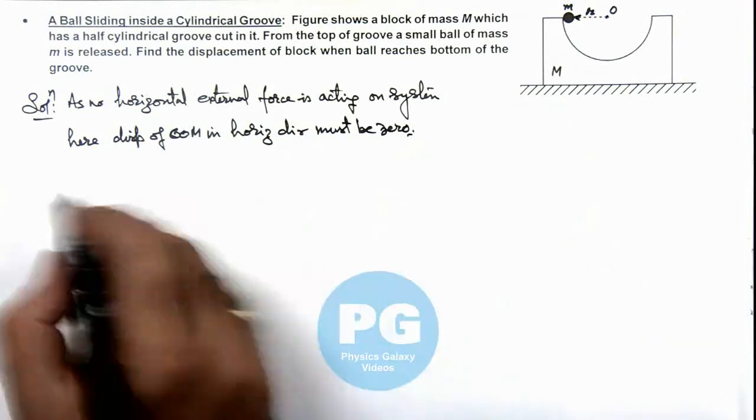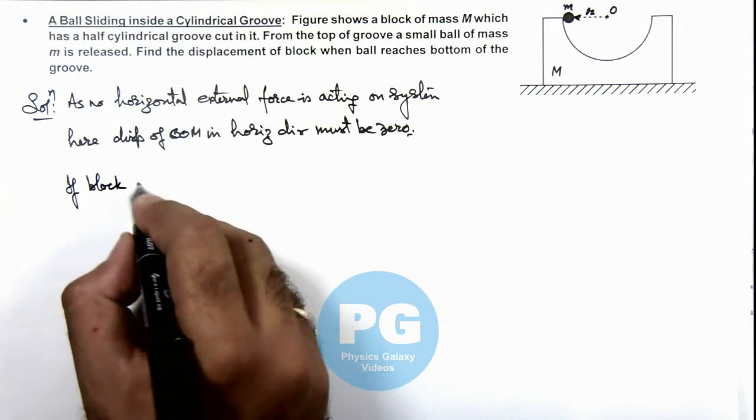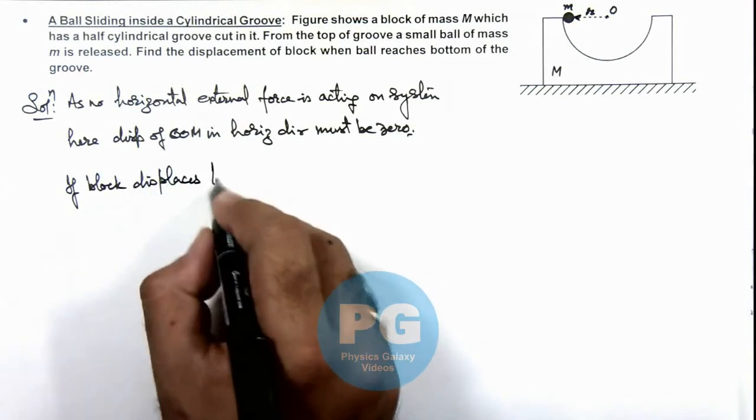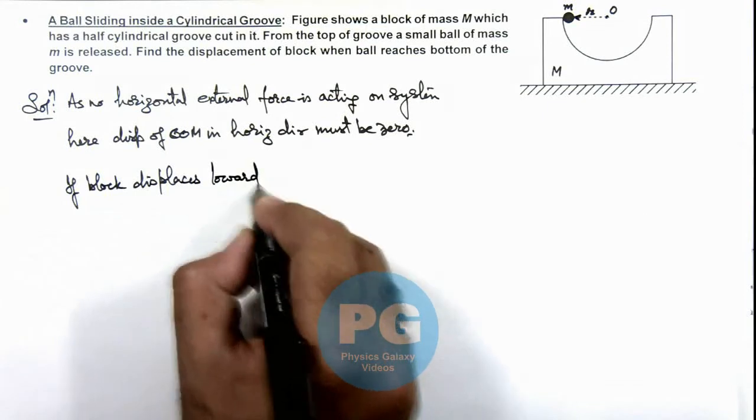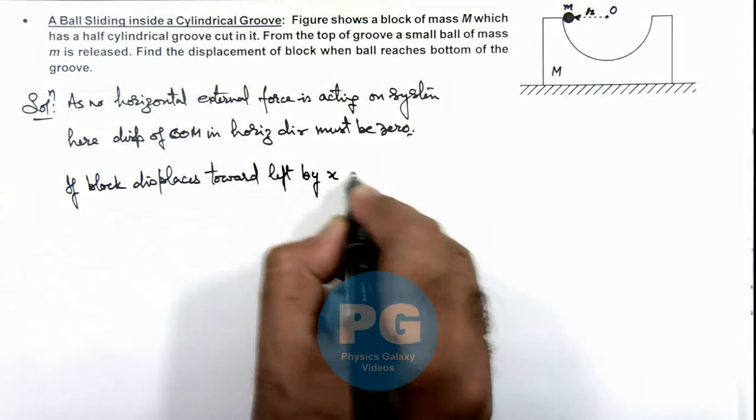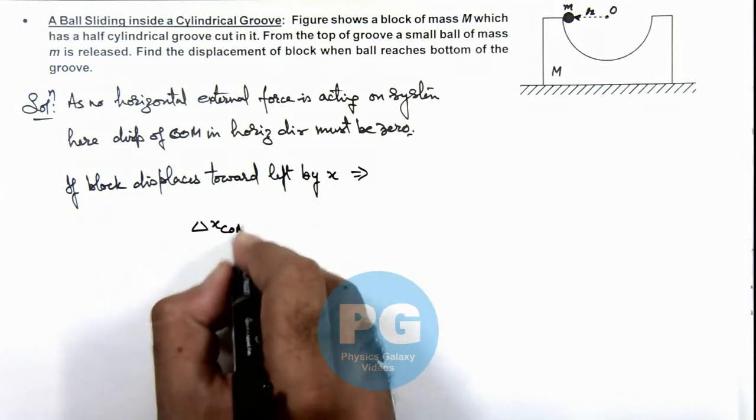So here we can see, if block displaces toward left by x, this implies we can write delta x of center of mass is equal to...